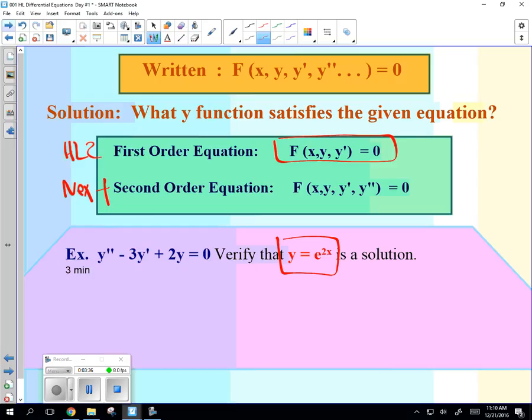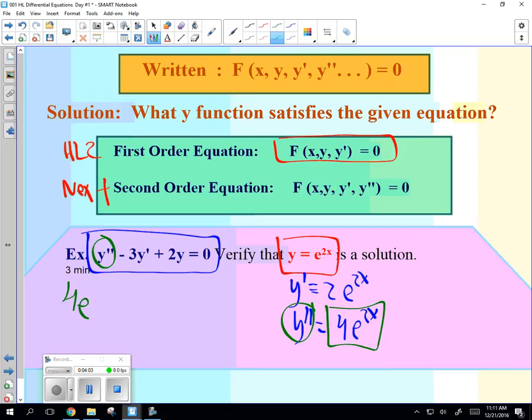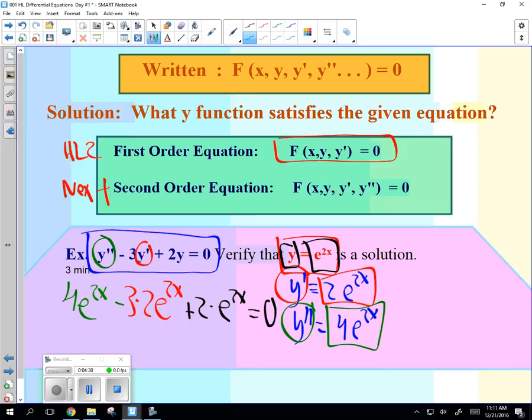Let's see how this kind of works. So my goal is always to find the y equal function. Well, let's see if this is a differential equation for this solution. So what is the derivative of e to the 2x? 2 e to the 2x. Very good. What's the second derivative? 4 e to the 2x. So what we're going to do is wherever we see a y double prime, I'm going to replace it with this. So 4 e to the 2x minus, now wherever I see a y prime, I'm going to put in 2 e to the 2x. And then wherever I see a y, I'm going to replace it with e to the 2x.